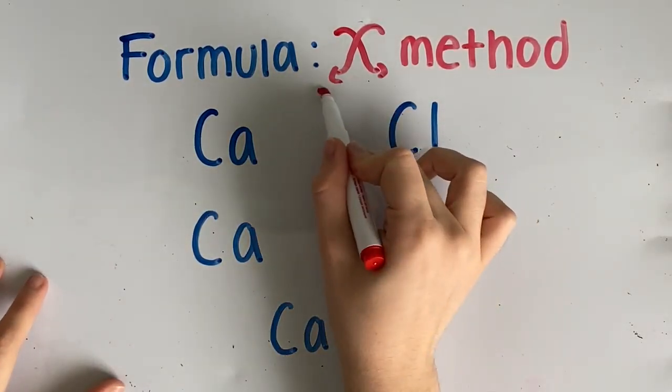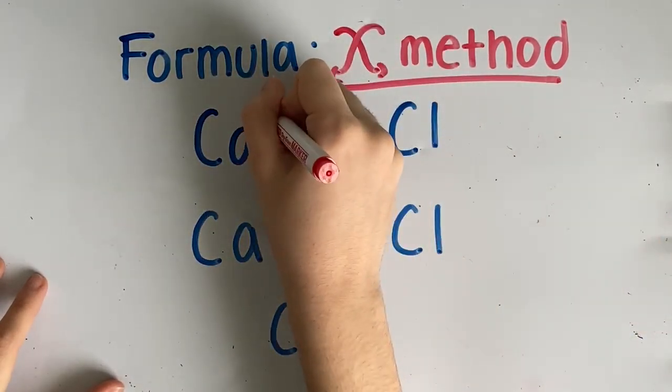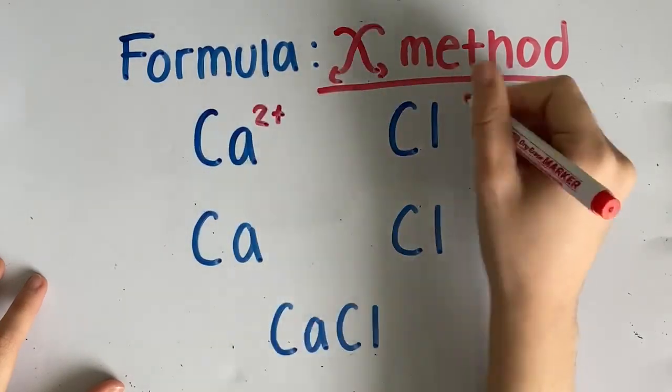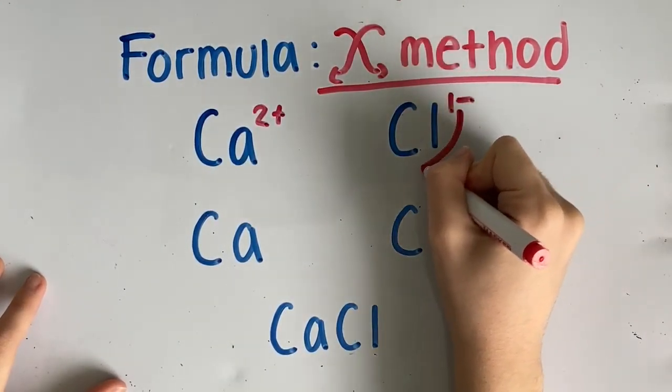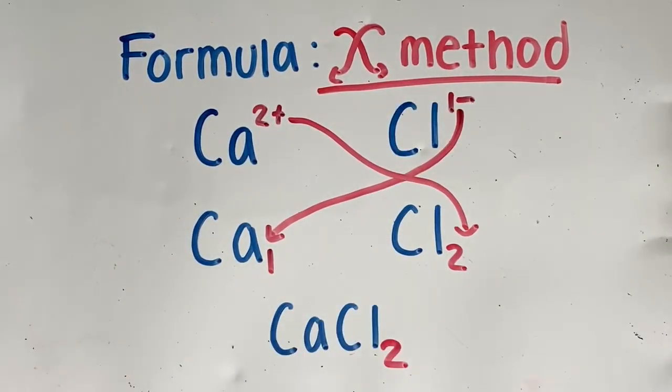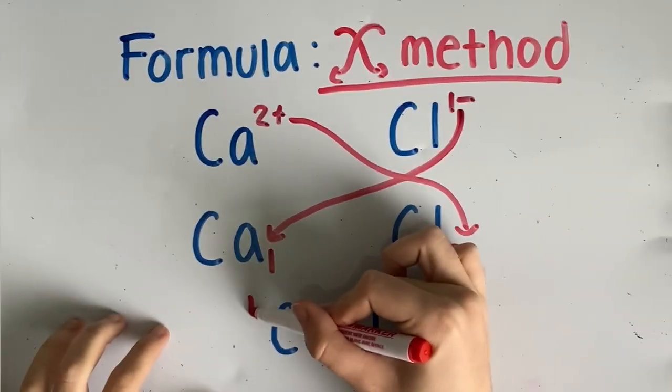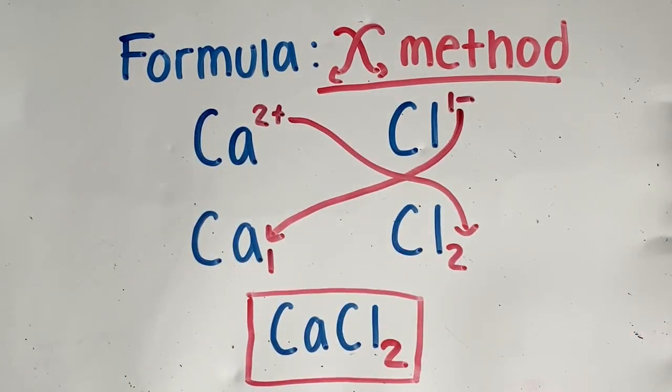In order to find the formula of this ionic compound, we need to use the crossover method. Since calcium has a charge of two plus and chlorine has a charge of one minus, swapping the charges shows us how many atoms of each are needed to complete a full transfer. Here is the formula. Chlorine gives calcium a subscript of one, which does not need to be written, and calcium gives chlorine a subscript of two. CaCl2 is your formula for calcium chloride.